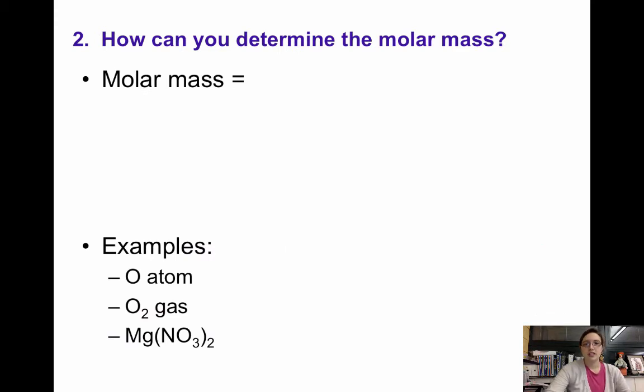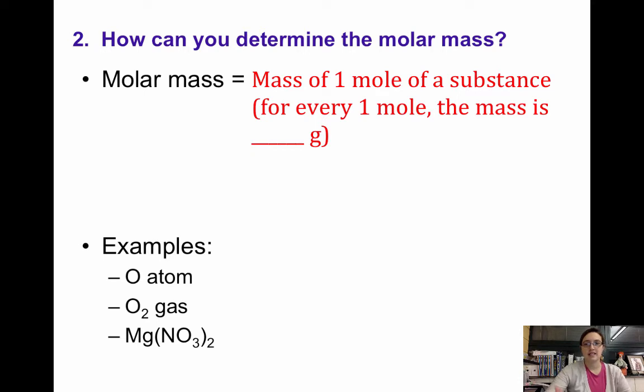So the next question is how can we determine molar mass? The definition of molar mass is simply the mass of one mole of a substance and we can think about it like a conversion factor. For every one mole the mass is blank grams. Every atom on the periodic table, every element, has its own unique molar mass.